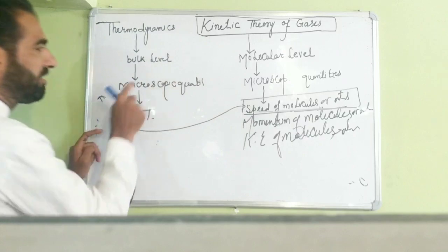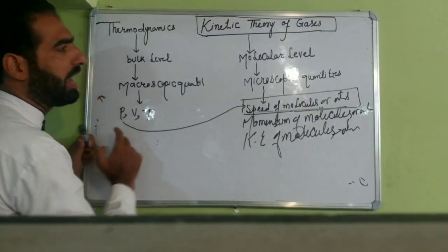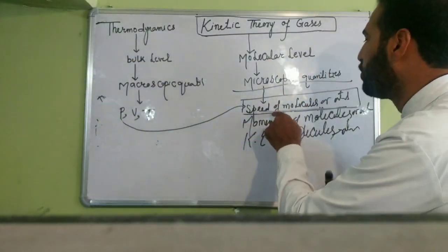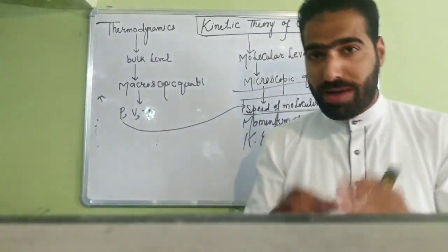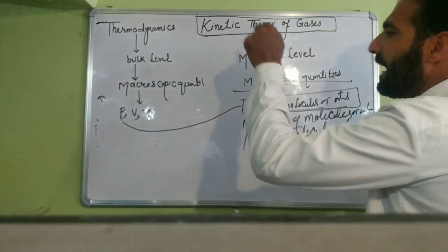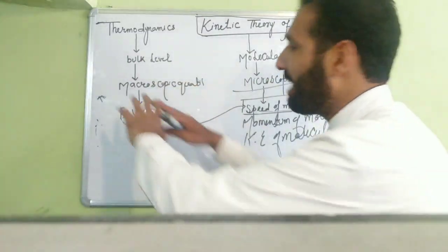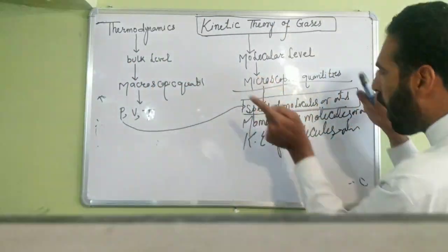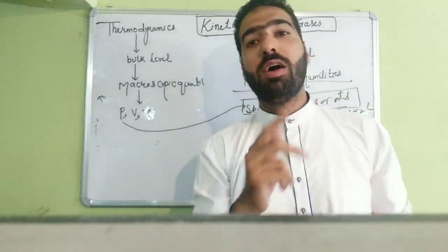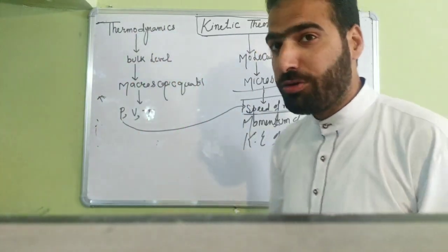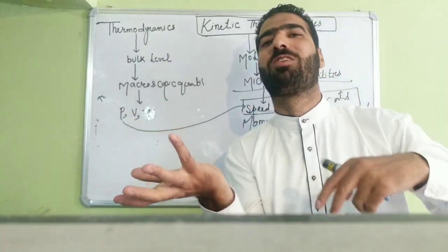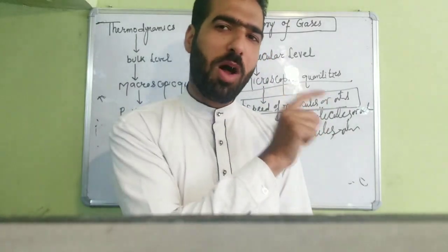Pressure is a macroscopic quantity; its cause is a microscopic quantity — that is the speed of the molecules. So the cause of pressure is the speed and momentum of the molecules. When the molecules possess momentum, they exert pressure on the walls. So when you study a thermodynamic system at the bulk level and also at the molecular level, you come to know why gas exerts pressure — due to the momentum of molecules.